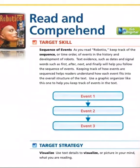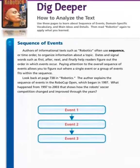Target strategy: visualize. Use text details to visualize, or picture in your mind, what you are reading. Comprehension — dig deeper: how to analyze the text. Use this page to learn about sequence of events, domain specific vocabulary, and main ideas and details. Then read 'Robotics' again to apply what you learn.